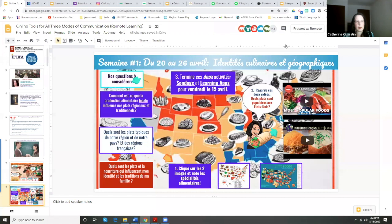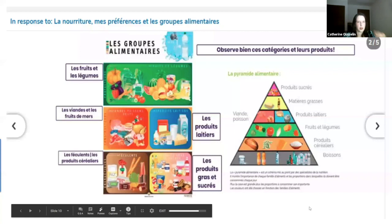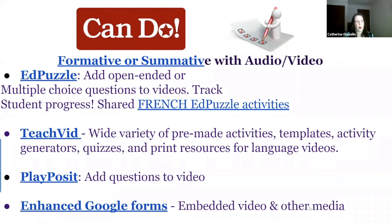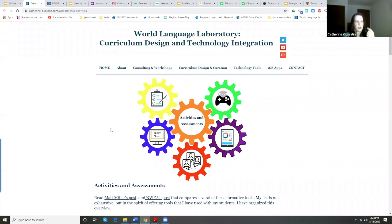Now we're going to get into the meat and potatoes — since we're talking about food. We'll do more than food, of course. Those are just screenshots of things I'm having students do. First we're going to look at interpretive listening and reading. I start with interpretive listening. Most of you have heard of EdPuzzle and what it can do — it's a great option.